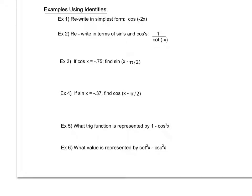Keep those identities handy as we look at some examples of how to use them, and we'll continue to expand on these as we work through the unit. In the first example, I'm asked to rewrite in simplest form cosine of negative 2x. Cosine is an even function, so that negative isn't necessary — I can just say that's the same thing as cosine of 2x.